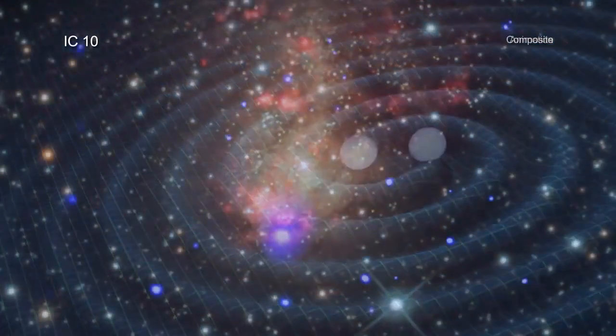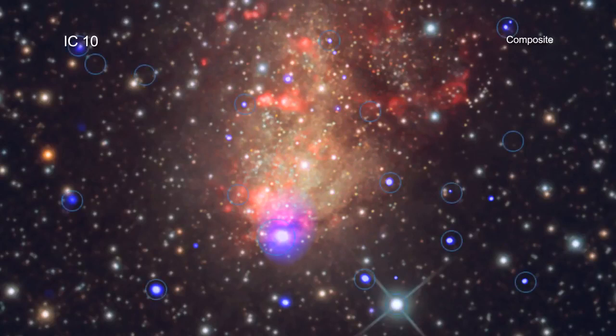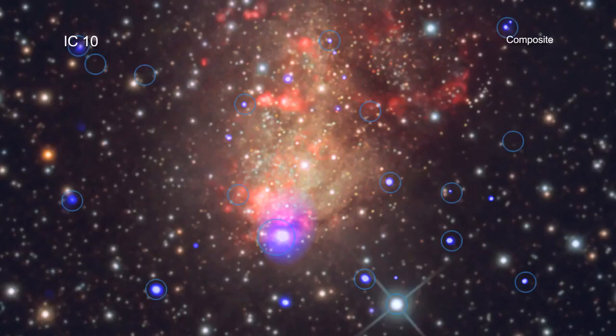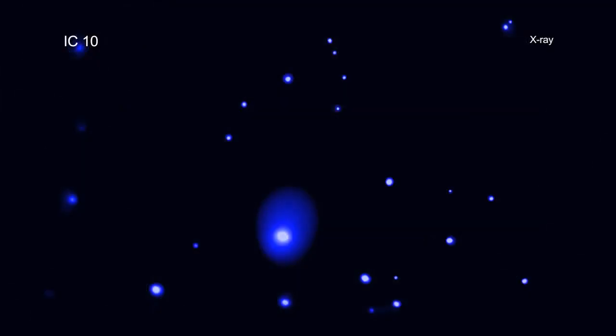By analyzing Chandra observations of IC-10 spanning a decade, astronomers found over a dozen black holes and neutron stars feeding off gas from young, massive, stellar companions. Such double star systems are known as X-ray binaries because they emit large amounts of X-ray light.